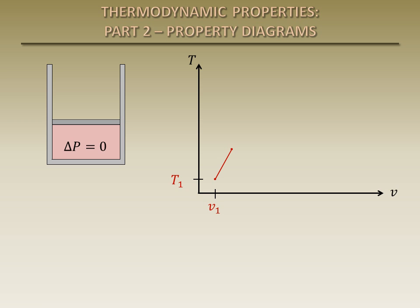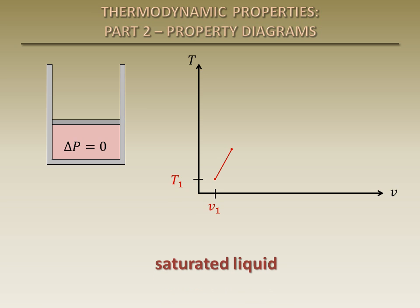If enough energy is added, it will become what is called a saturated liquid. At this point, it is still a liquid, but any additional energy added to it will cause some of the liquid to vaporize. The temperature of a saturated liquid is called the saturation temperature, and the specific volume is denoted by VF.